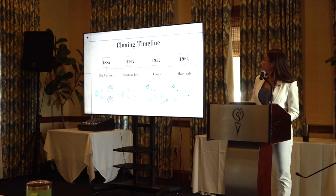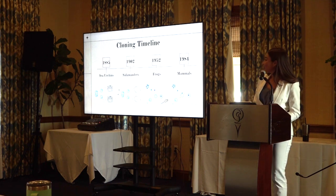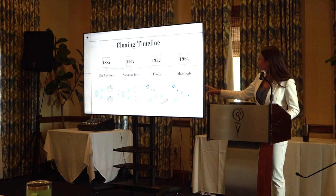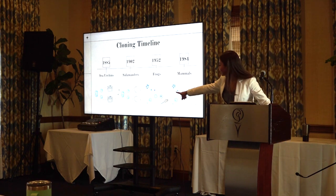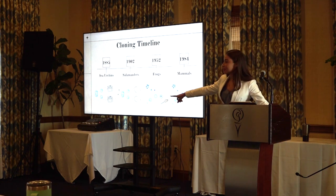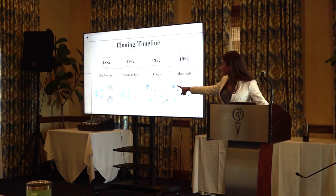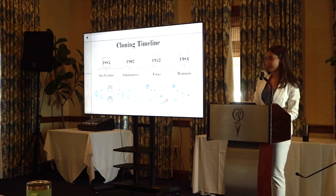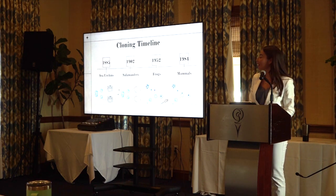In 1952, Briggs and King performed the first successful nuclear transfer. Here is an enucleated egg cell in which the nucleus of the egg cell is removed, and then the nucleus of an embryonic cell is implanted into the egg cell, and then it grows and develops into a frog. This was performed in a tadpole.